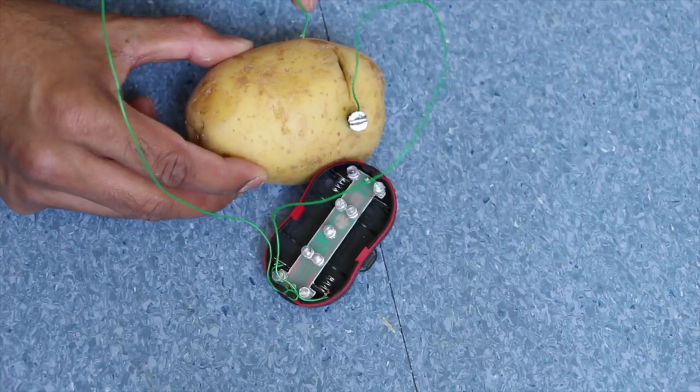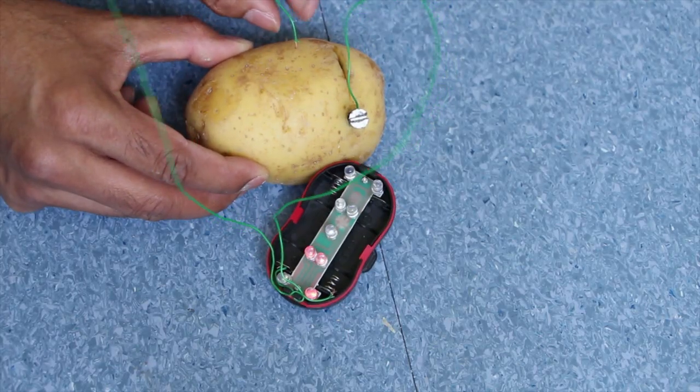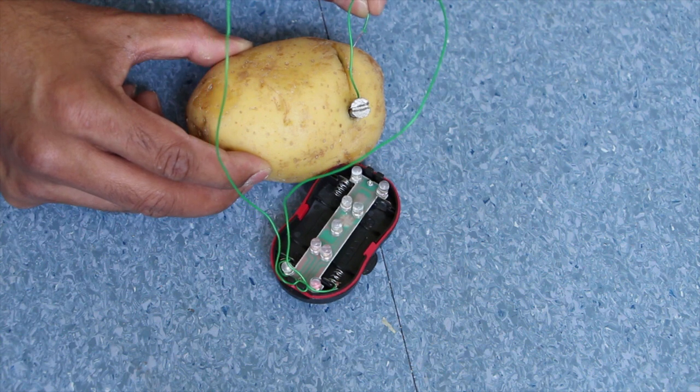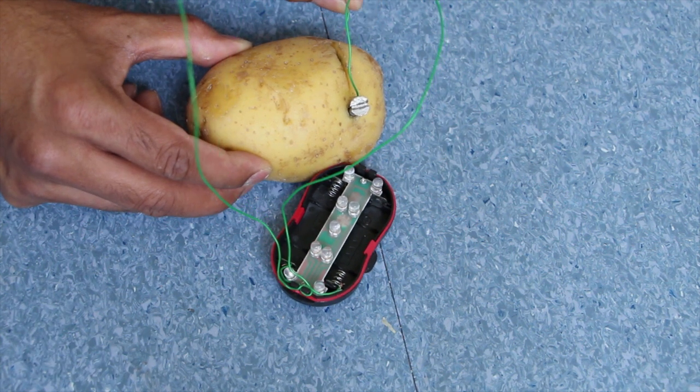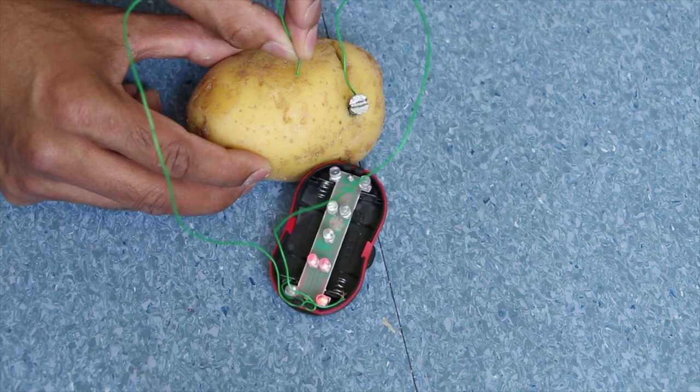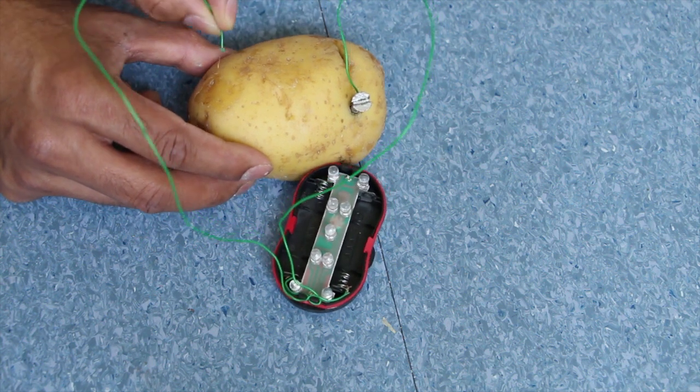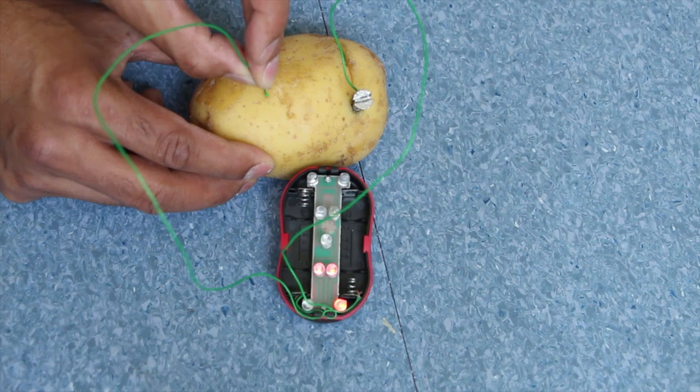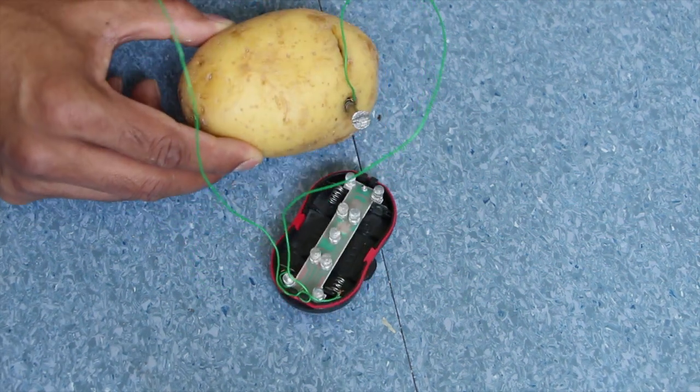I believe you guys are awesome and so brilliant. I have one question for you guys. As you can see, the positive terminal is fixed. However, if I connect the negative terminal anywhere on the potato, the LEDs are giving light. However, the negative terminal is fixed at this point. Do you have any explanation about it?